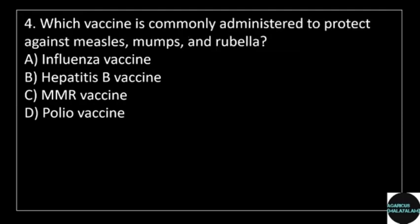4th question: which vaccine is commonly administered to protect against measles, mumps, and rubella? Answer options: option A, influenza vaccine; option B, hepatitis B vaccine; option C, MMR vaccine; option D, polio vaccine.